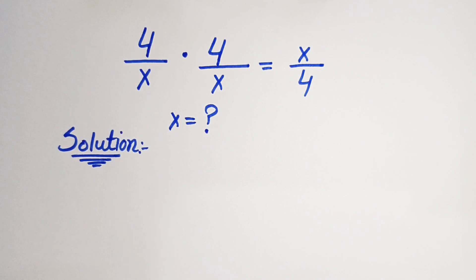Hello everyone, welcome back to Amin Math Club. Today we have a nice exponential problem which is an Olympiad problem: 4 over x raised to the power of 4 over x is equal to x over 4.